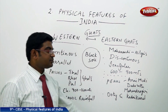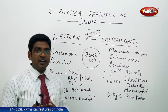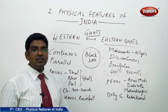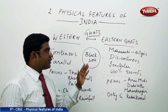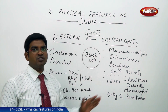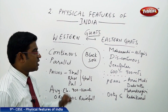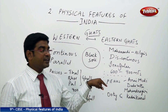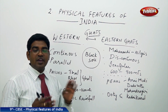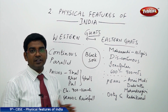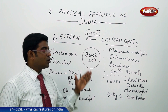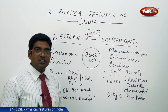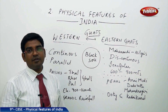The Eastern Ghats extend from the Mahanadi valley to the Nilgiri hills. From the Mahanadi valley to the Nilgiris, we find a wide stretch along the eastern coast, but these are not continuous like the Western Ghats. They are discontinuous, very irregular, and their average height is 600 to 900 meters.